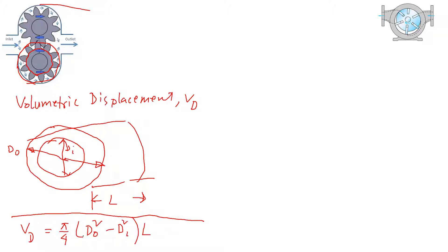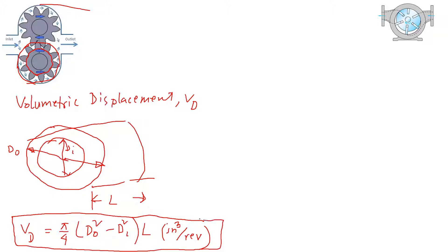If dimensions are in inches, then this is inch squared and L is in inches. The unit will be inch cubed per revolution. Every revolution, a volume of π/4 × (D_O² − D_I²) × L will be expelled.